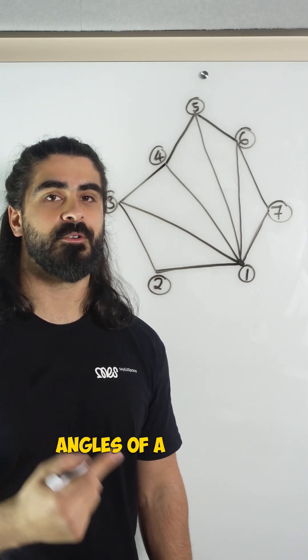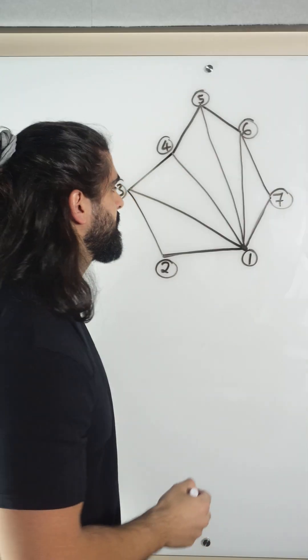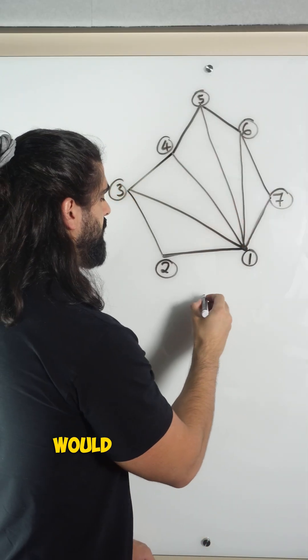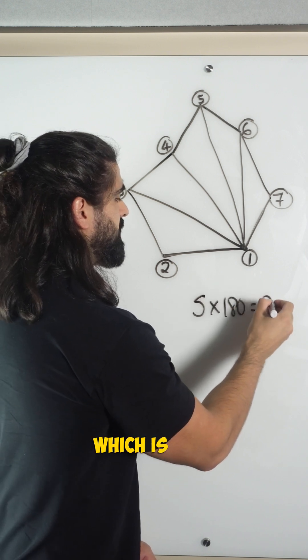And what do the interior angles of a triangle add up to? 180. So if we have five of them, the total would be five times 180, which is 900.